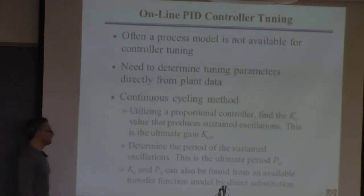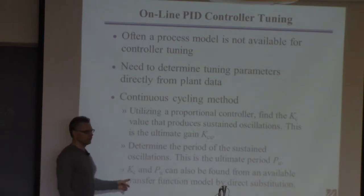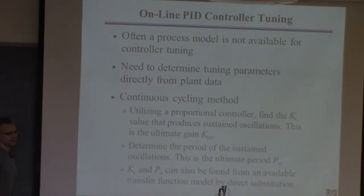But it ends up that you can find these values by direct substitution. You remember when we did direct substitution, was that last time? And I said one of the nice things about direct substitution is you can not only find the range of controller gains that make the system stable, you can find the type of instability, and one type is this oscillatory instability.